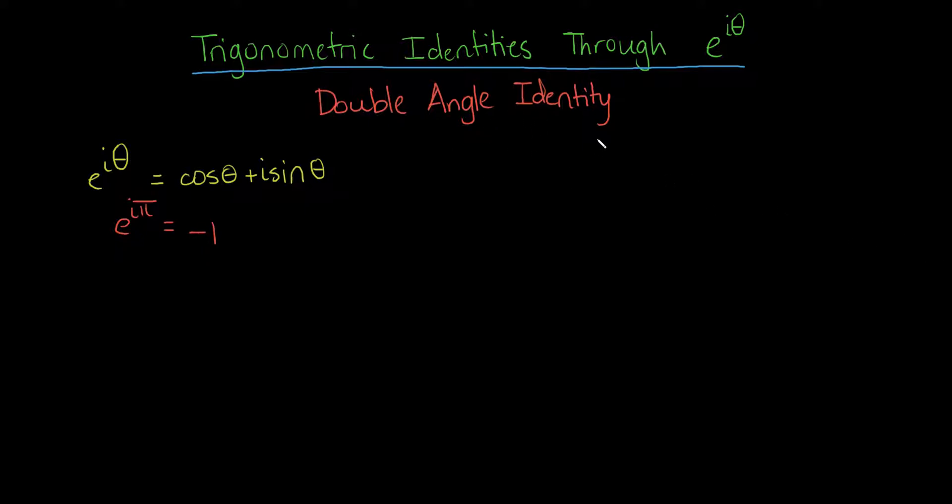So, the double angle identity. This identity involves asking if we have the cosine of 2 times an angle, what is this, and what is the sine of 2 times an angle?